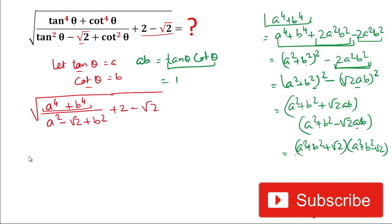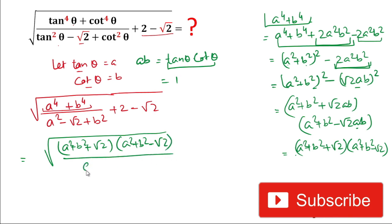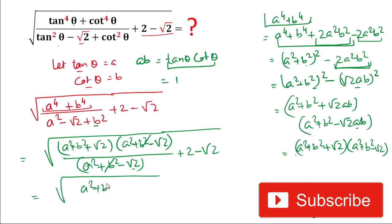Putting this value into our expression, we get under root of (a² + b² + √2)(a² + b² − √2) divided by (a² + b² − √2). The factor (a² + b² − √2) in the numerator and denominator cancels out. Also, −√2 and +√2 cancel, so our new value is: under root of (a² + b² + 2).